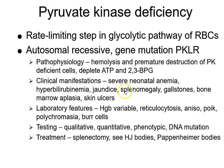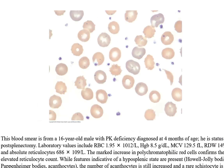In pyruvate kinase deficiency, hemoglobin can be all over the place, but you'll see reticulocytosis, anisocytosis, poikilocytosis, polychromasia, and burr cells. To test for it, you need to find out whether the pyruvate kinase enzyme is present in the cells or check the genes. Treatment is splenectomy, and after that you'll of course see Howell-Jolly bodies and Pappenheimer bodies again.